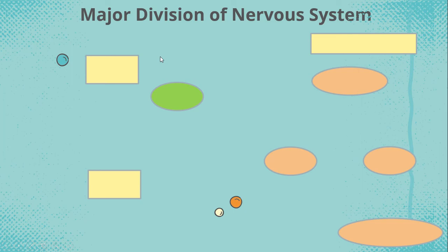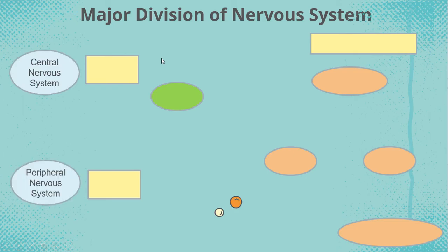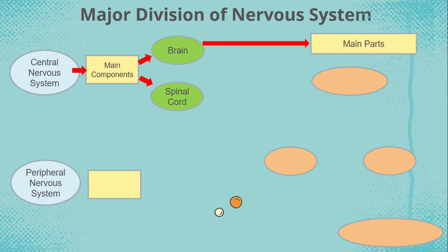We have the major divisions of the nervous system. We have the central nervous system and the peripheral nervous system. Under the CNS or central nervous system, we have the brain and spinal cord. Under the brain, the main parts are the cerebrum, cerebellum, and the brainstem.